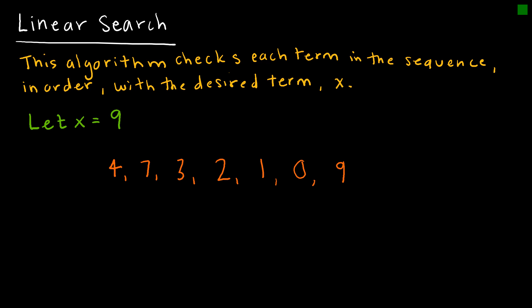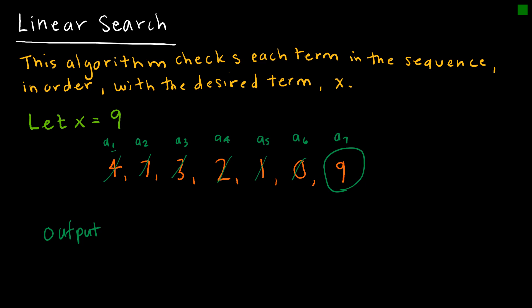We're going to look at just two search algorithms. The first is the linear search algorithm, which basically checks each term in the sequence until it arrives at the desired term. For instance, given my list of values and looking for term X, the computer looks first at a sub one — that's not nine — a sub two is not nine, the third value is not nine, the fourth, fifth, sixth, and the seventh value is nine. So the output of the linear search algorithm would be seven, meaning it is the value in the seventh location.